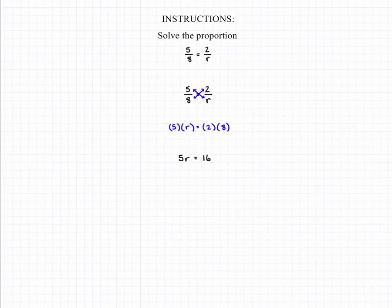And if we divide both sides of the equation by 5, we will end up with our final answer, which is that r is equal to 3.2.